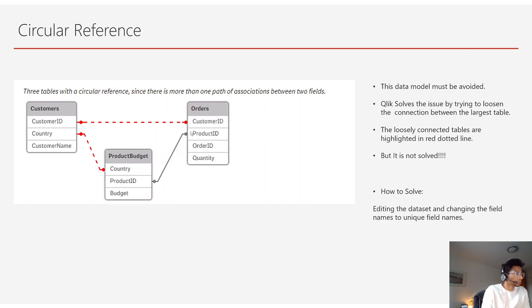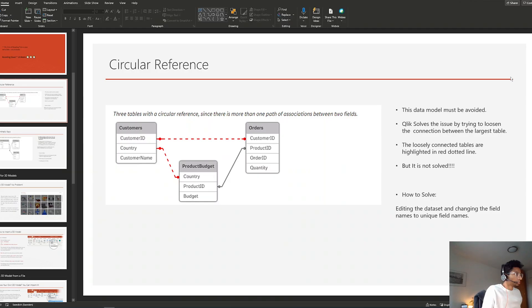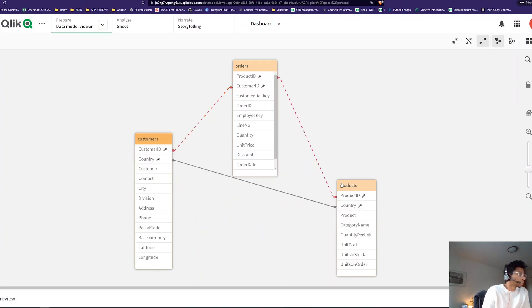To solve a circular reference, ensure there is only one connection between each pair of tables. For example, if Customers has a Country field and Product Budget also has a Country field creating an unintended link, you can rename it — like 'product budget per country' — giving it a unique name. This removes the circular connection and leaves only the intended associations: customer_id linking Customers to Orders, and product_id linking Orders to Product Budget.